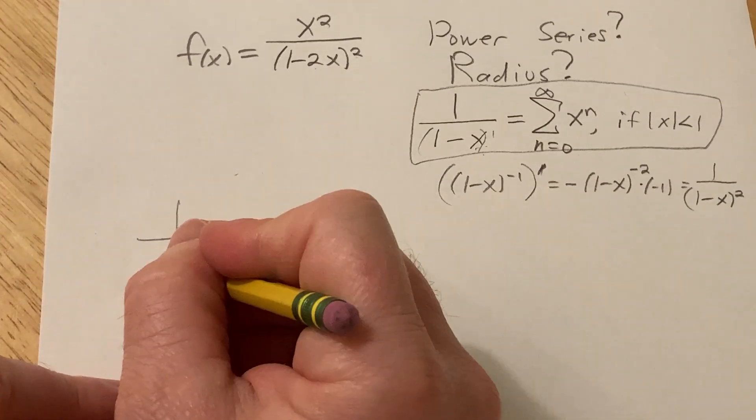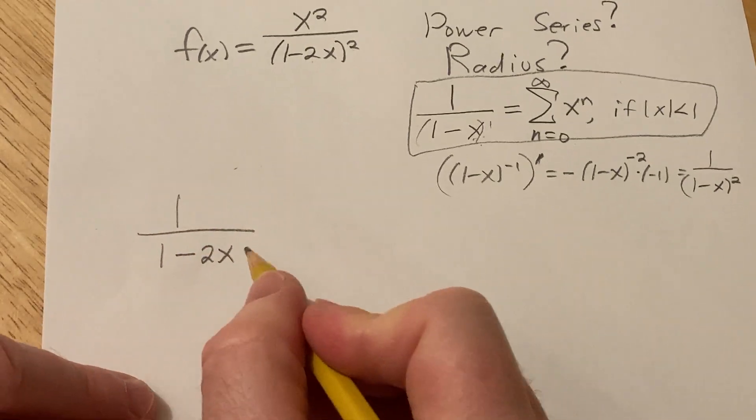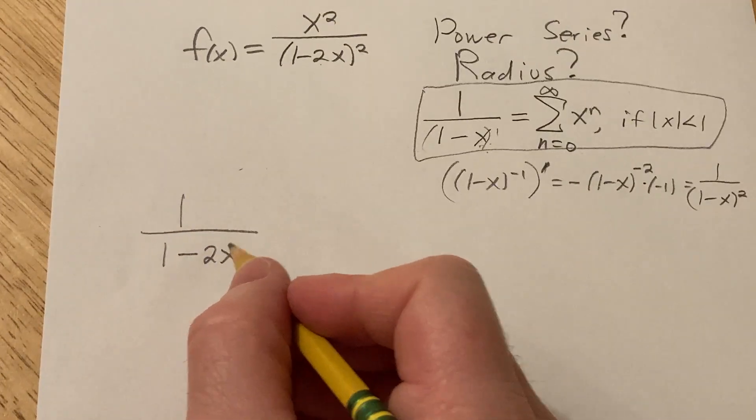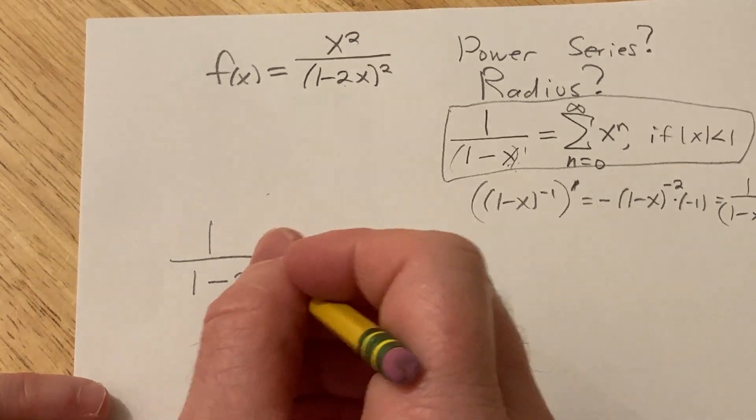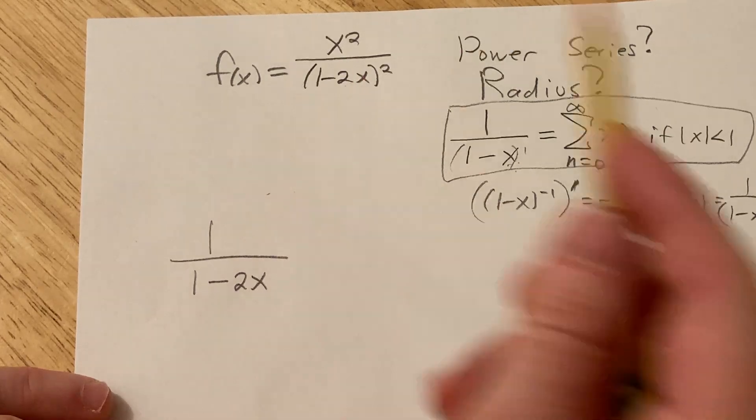I'm going to start with this. I'm going to start with this function here, and I'm going to find the power series for this and then differentiate it. Basically, I'm going to take this and start doing stuff to it to make it look like this and then we're done.